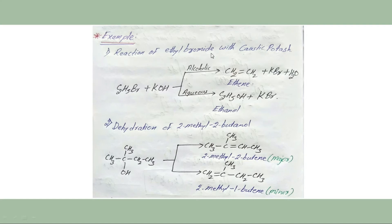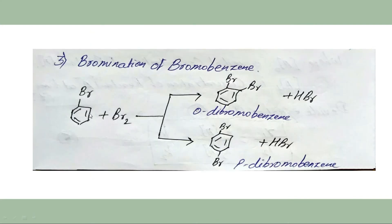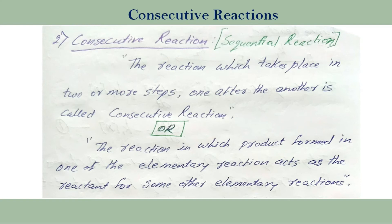Some examples of parallel reactions: the reaction of ethyl bromide with caustic potash (KOH) — in alcoholic solution it gives ethene, and in aqueous conditions it gives ethanol. Similarly, the dehydration of 2-methyl-2-butanol gives two products: 2-methyl-2-butene and 2-methyl-1-butene, with 2-methyl-2-butene being the major product. Another example is bromination of bromobenzene, yielding ortho-dibromobenzene or para-dibromobenzene.